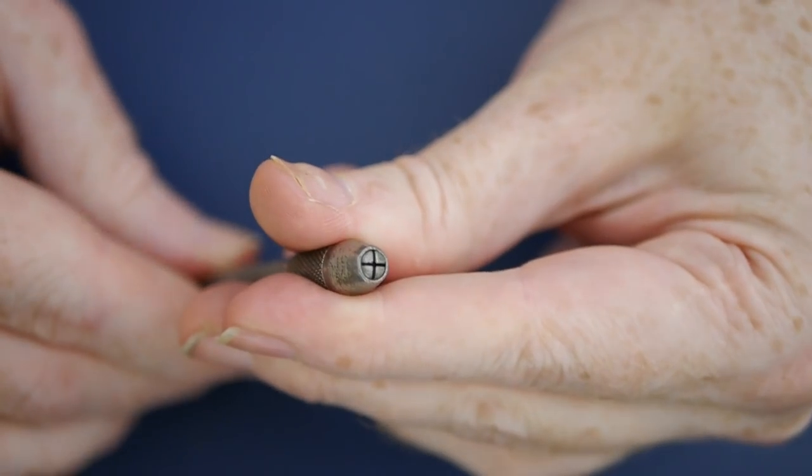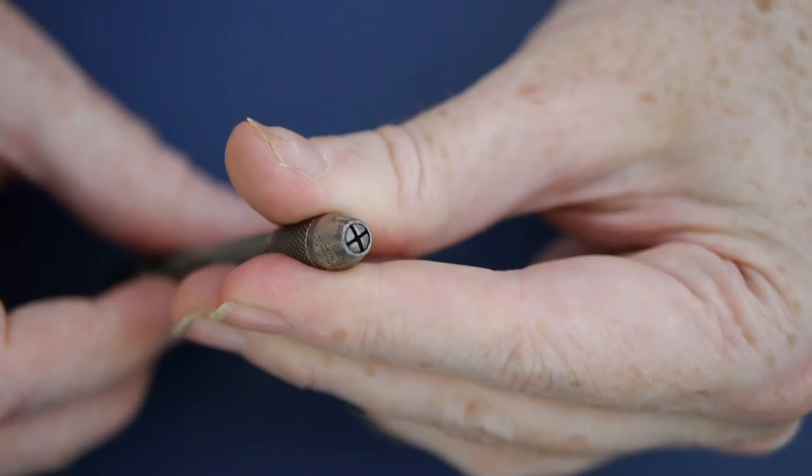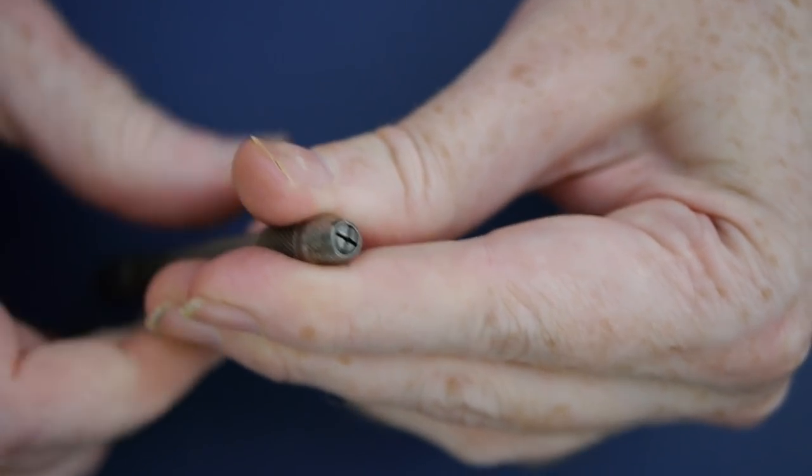The other tool is a pin vise. These are used to hold very small parts securely, and are always useful to have around.